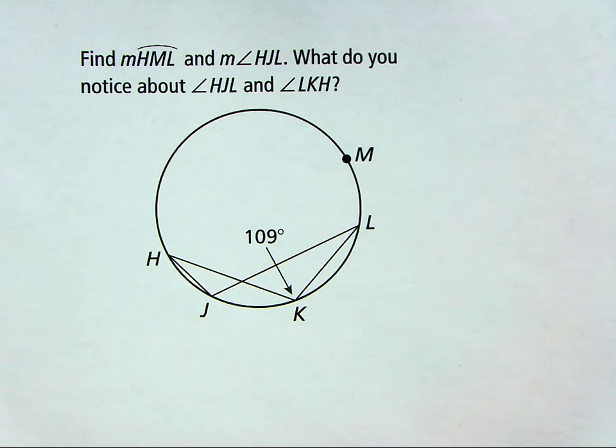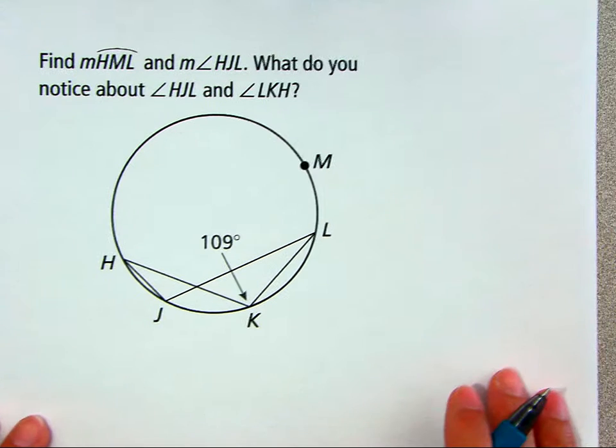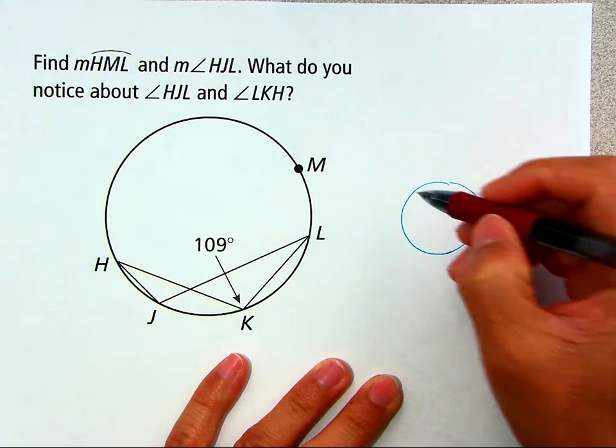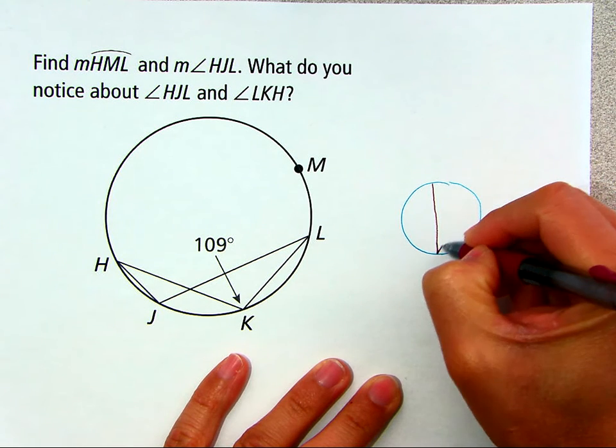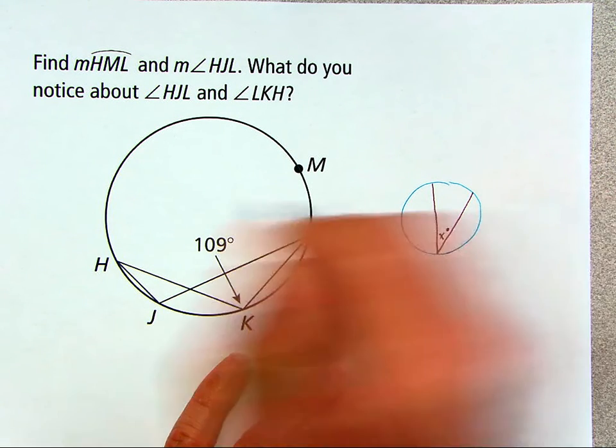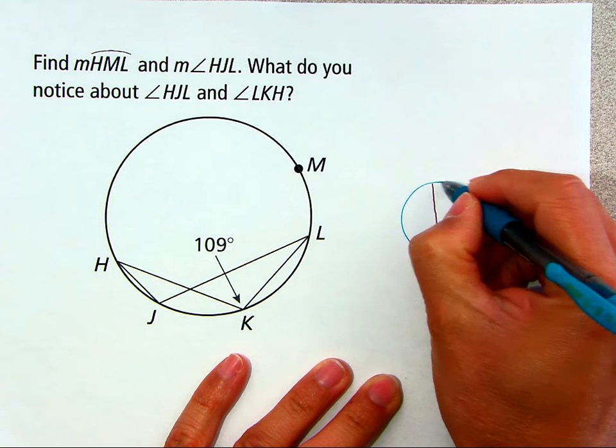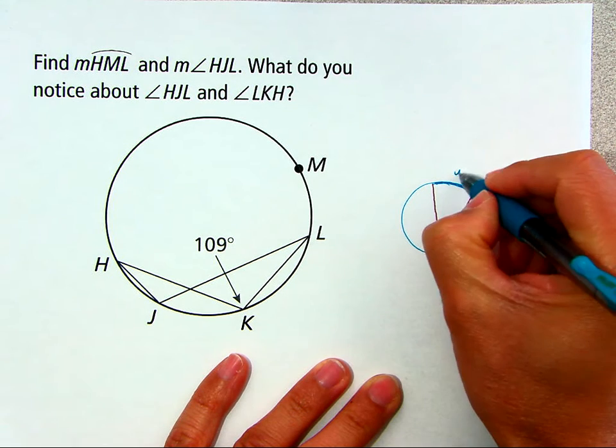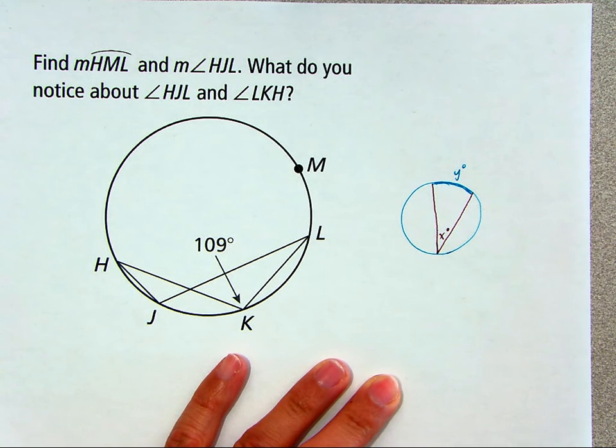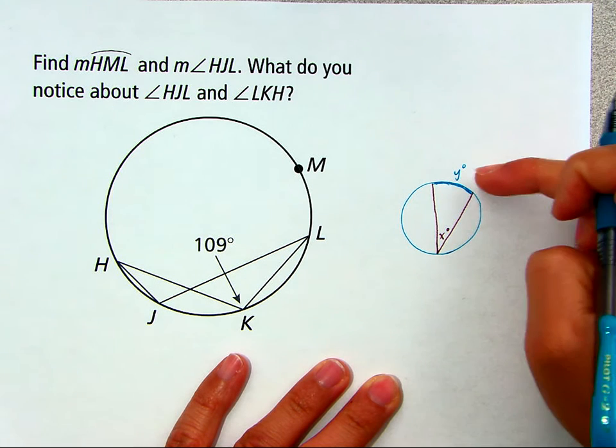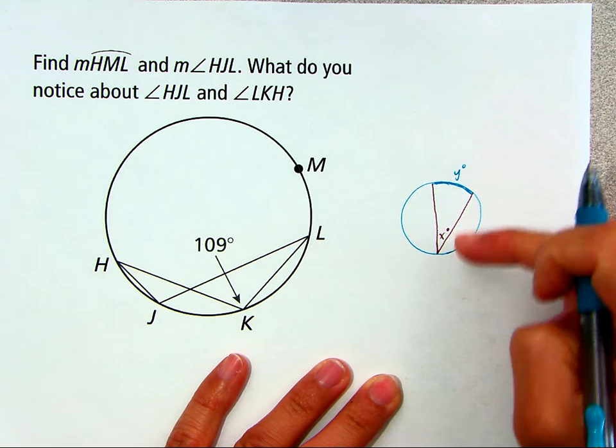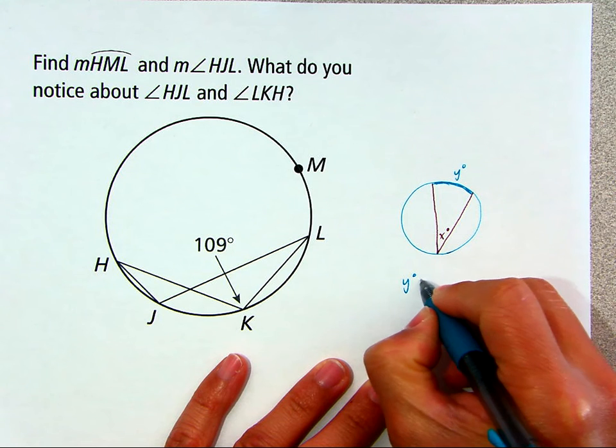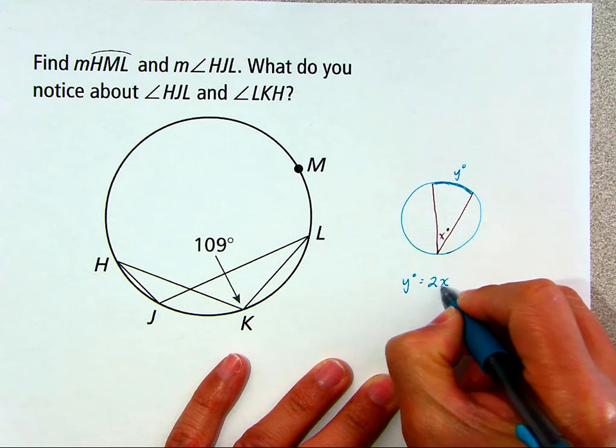To recap from the last video, we had this result which was for some inscribed angle, which we call x degrees, it produces an arc along the circle, which we would call that y degrees. And the relationship between the two is that the arc is twice the inscribed angle. So y is 2 times x.